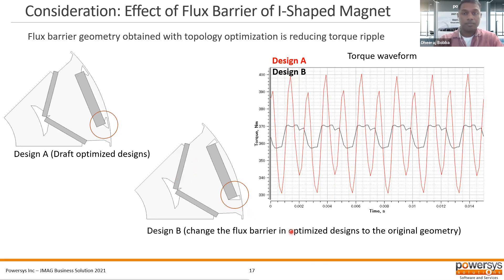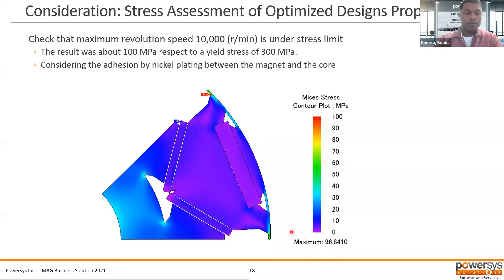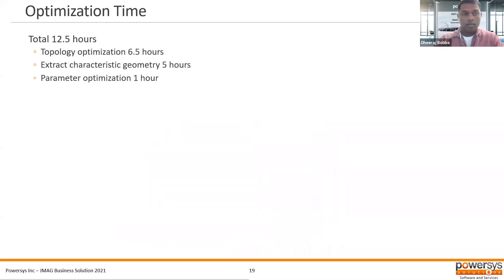Also, doing some structural analysis at maximum RPM of 10,000, the results show approximately 100 megapascals maximum stress, while the yield strength for this material is somewhere around 300 megapascals. Jumping to optimization time, the total time for this process was 12.5 hours. That includes the topology optimization initially for 6.5 hours, and extracting the geometry, checking the sensitivity, and setting up the necessary process for parametric optimization is about 5 hours. Then performing the parametric optimization is 1 hour. The topology optimization has approximately 40,000 cases, and the parametric optimization approximately 10,000 cases.